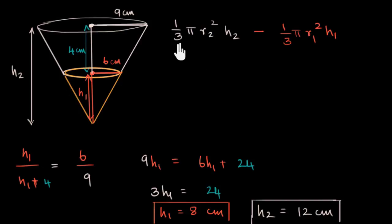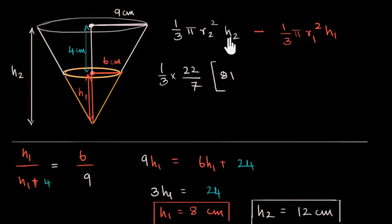Now let's do that. 1 by 3 into pi can be taken out common. I'll take it as 22 over 7. Let's maybe draw a line here so that we know this is where we did that calculation, this is where we're finding the volume. And this can be multiplied by r2 squared, which is 9 squared—81—multiplied by h2, which is 12. 81 into 12 minus...